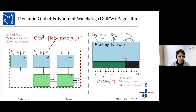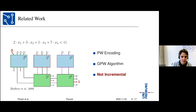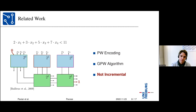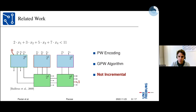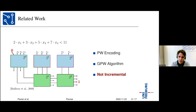Ballieu et al. introduced this scheme, but not an incremental variant where each bucket already has a tear variable. By only setting the tear variables and iterating over all output variables, this approach—called the polynomial watchdog encoding and generalized polynomial watchdog algorithm—enables incremental solving. The dynamic variant introduced here is called the dynamic polynomial watchdog encoding and dynamic generalized polynomial watchdog algorithm.